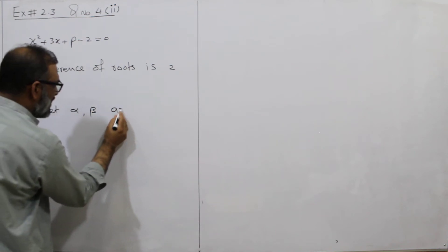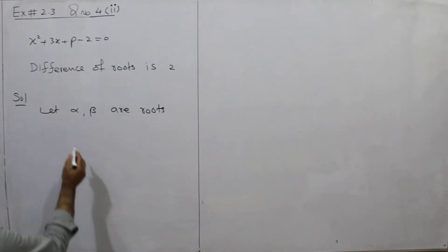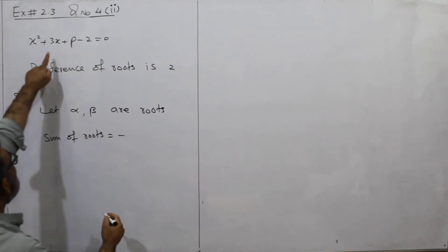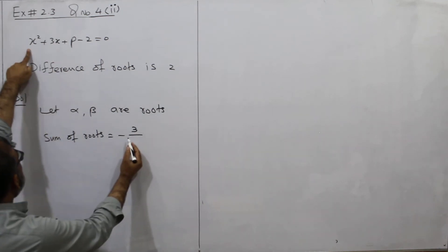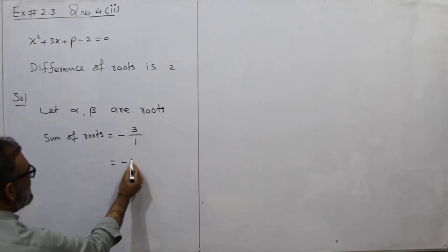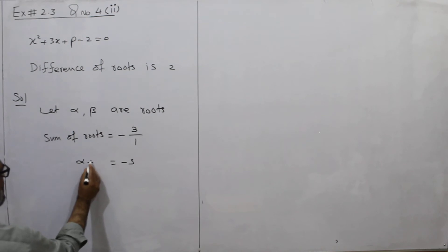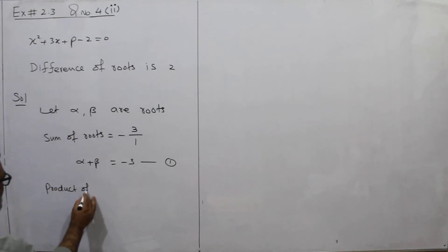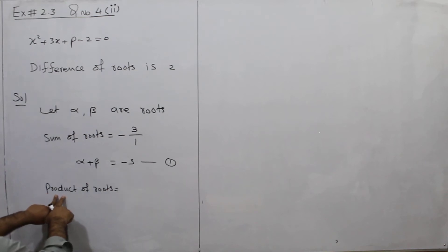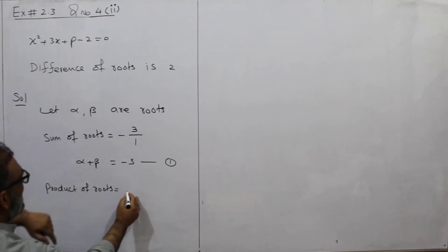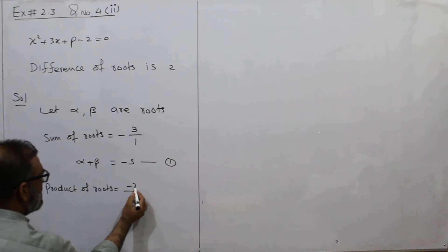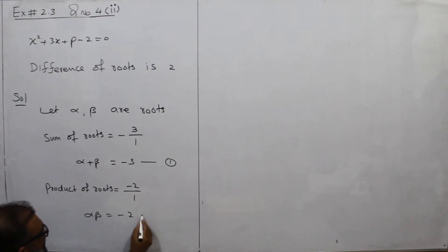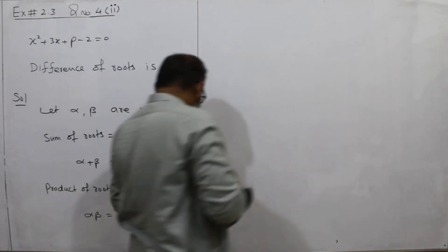Alpha and beta are roots. According to the statement, the sum of roots formula gives alpha plus beta equal to minus 3 — this is equation 1. Now the product of roots: alpha times beta is equal to minus 2 — this is equation 2. These two equations are ready.